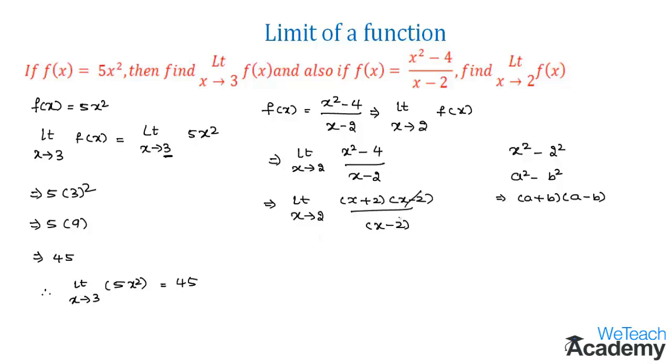(x - 2) and (x - 2) get cancelled, and we get the function as limit x tends to 2 of (x + 2).